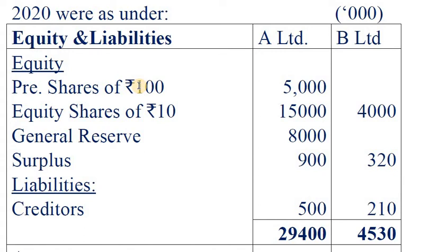Next, balance the realization account. While balancing the realization account, we get 4,80,000 as profit. The general entry being: Realization account Dr. to equity shareholders account, 4,80,000.